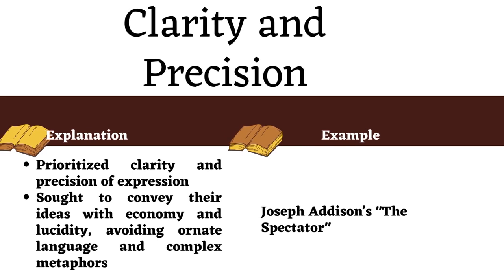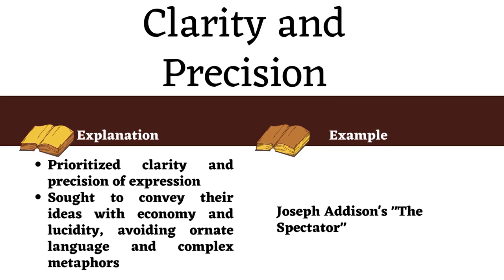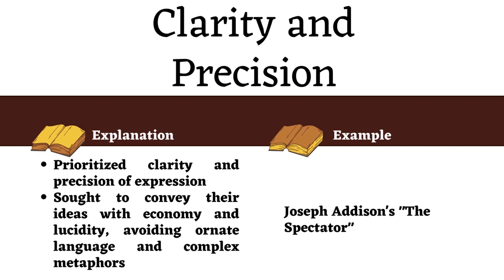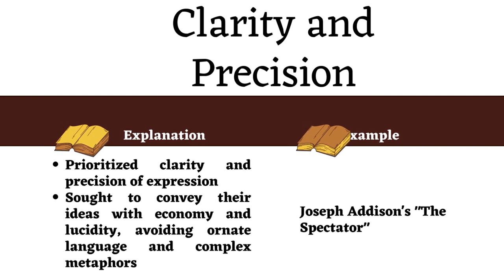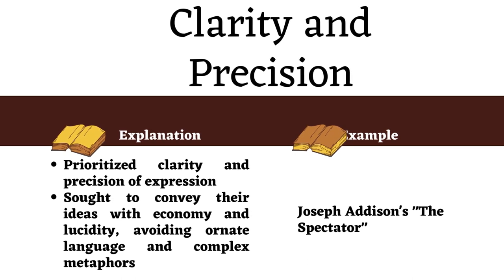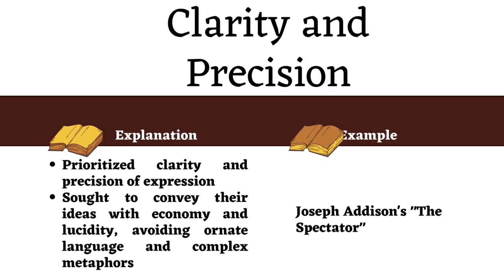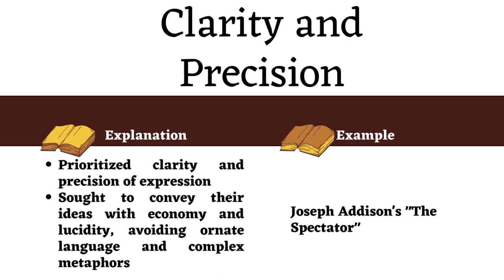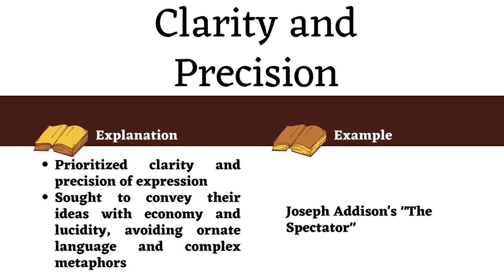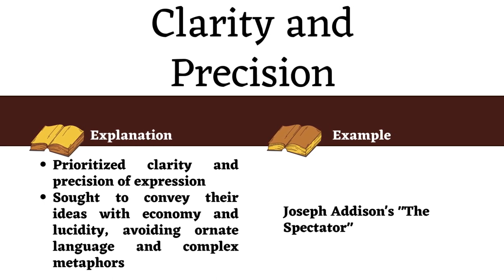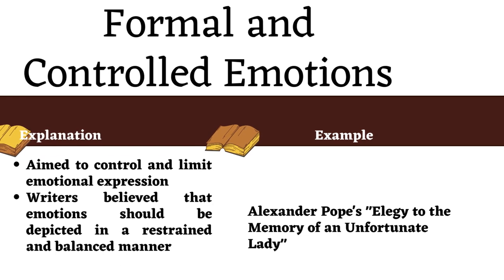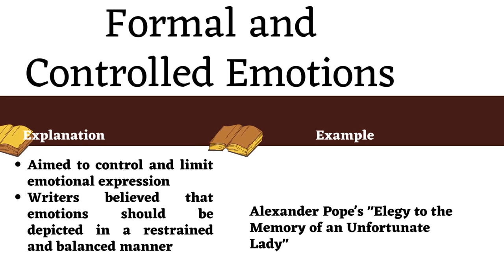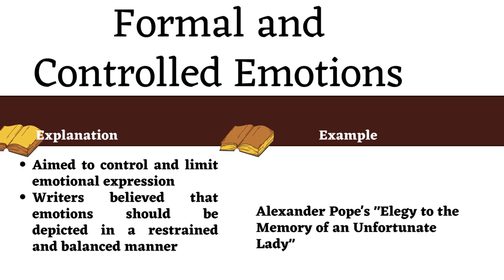Clarity and precision: neoclassical literature prioritized clarity and precision of expression. Authors sought to convey their ideas with economy and lucidity, avoiding ornate language and complex metaphors. Joseph Addison's essays in The Spectator serve as an excellent illustration, communicating moral and ethical ideas with simplicity and grace.